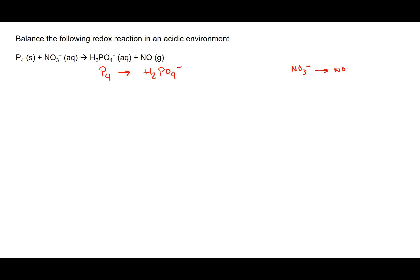The way you approach it is to first break out the two different half-reactions: P4 forms H2PO4⁻, and NO3⁻ forms NO gas. Looking at the phosphorus half-reaction first, the first step is to balance all non-oxygen and non-hydrogen atoms. We have four phosphorus atoms on the reactant side but only one on the product side, so we multiply H2PO4⁻ by four to balance the phosphorus atoms.